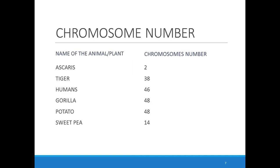Let's look at the chromosome numbers of different animals. Ascaris has 2 chromosomes, tiger 38, humans 46, gorilla 48, potato 48, and sweet pea 14. Gorilla and potato have the same number of chromosomes, yet one is distinct from the other in body size, appearance, color, behavior, etc.